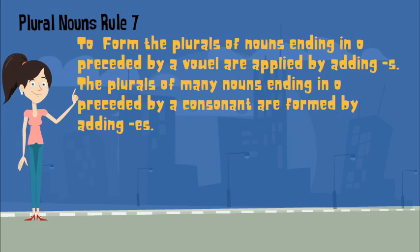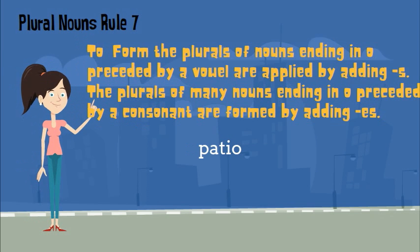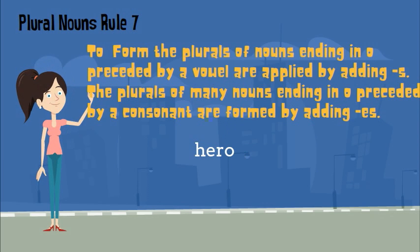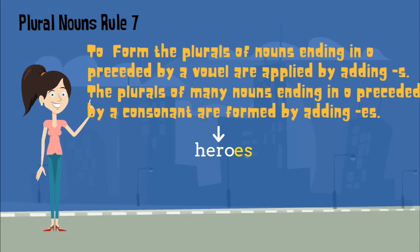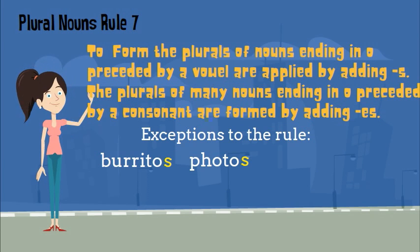Another rule: plurals of nouns ending in O preceded by a vowel are formed by adding S, while plurals of many nouns ending in O preceded by a consonant are formed by adding ES. Stereo ends with O with a vowel before it, so to make it plural you just need an S. Another example is patio — there is a vowel before the O, so you would simply add an S. Take a look at the noun hero — it has a consonant before the O, so you add ES to make it plural. It is the same for tomato — because there is a consonant before the O, you add ES. However, there are some exceptions you will need to memorize, such as burritos, photos, and silos.